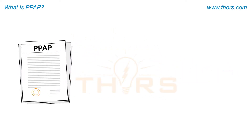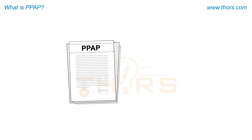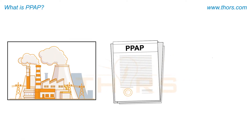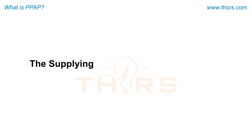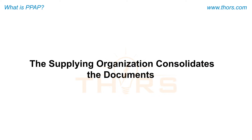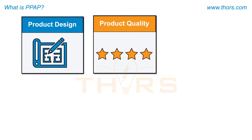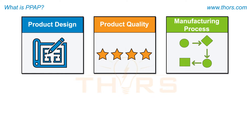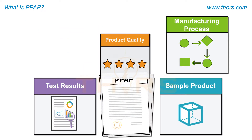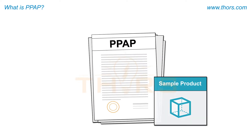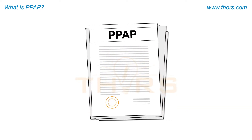Production Part Approval Process, or PPAP, is an authorization process where the supplying organization seeks the customer's confidence and approval on its ability to produce products that conform to customer requirements. The supplying organization consolidates documents that describe product design, product quality, manufacturing process, test results, and sample product from a production run to validate that the supplier is capable of meeting the product requirements and volume requirements.